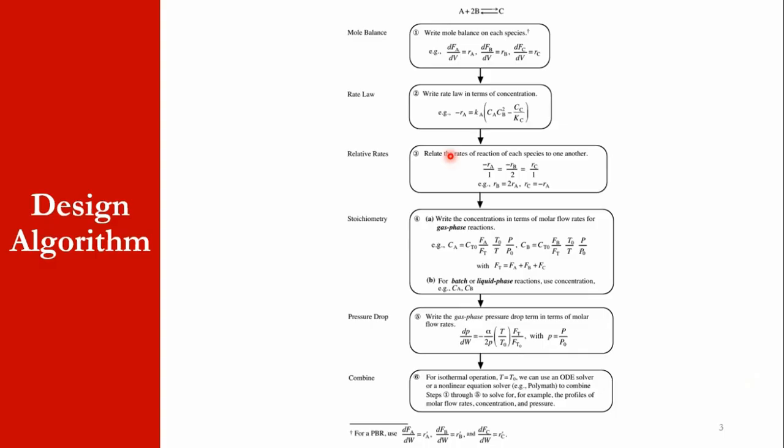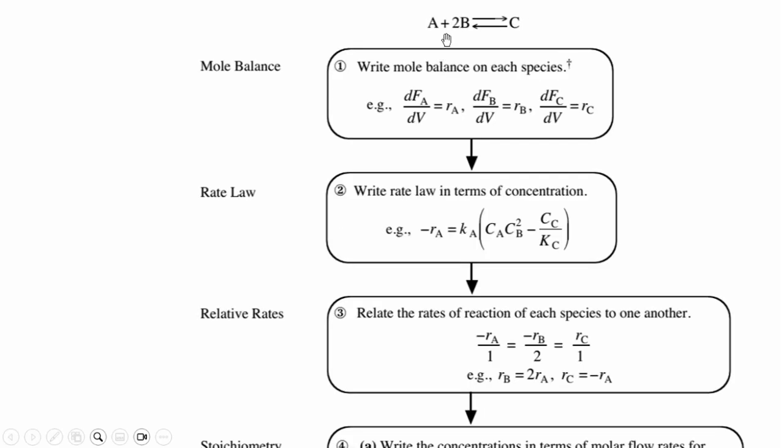Starting with this design algorithm, you see this is a reversible reaction that we assume: one mole of A reacts with two moles of B to produce one mole of C in a reversible manner.